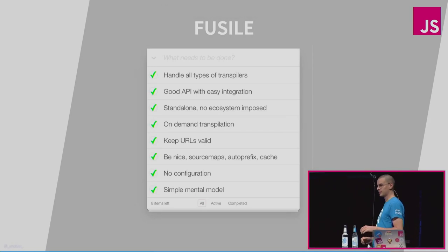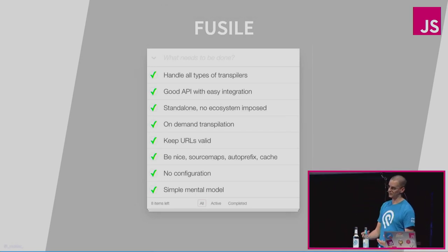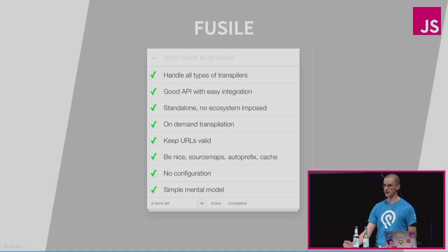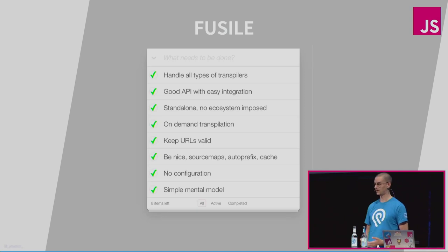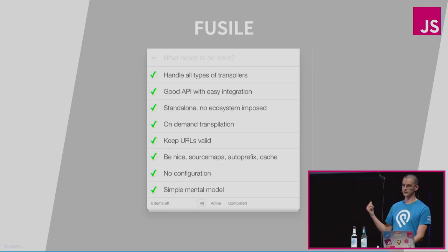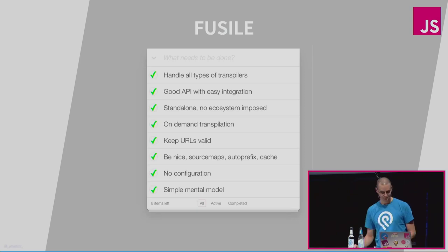The project is called Fusile. It has the same properties of the Express middleware I went through before, but it also checks the two other boxes: it has a good API — a file system API — that any other tool can consume, be it your linter, your tester, or your web server. You don't even need a clever web server anymore — you can use a Python static web server, or Apache, or whatever. It's standalone, and it does impose Node as an ecosystem, but that's because I only know how to program in Node. If any of you know how to write this in C, come poke me.